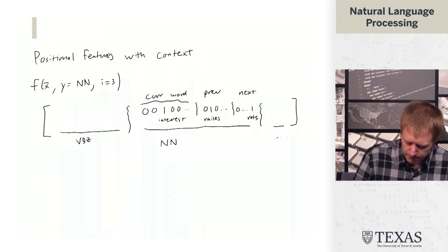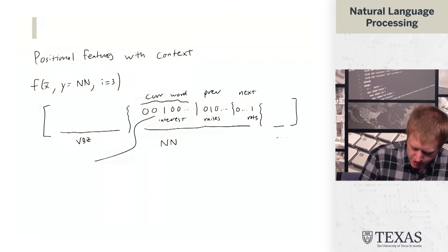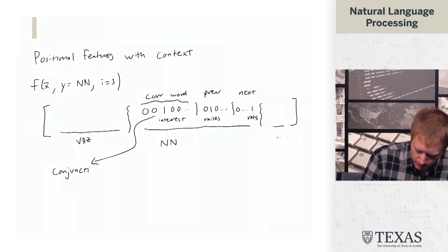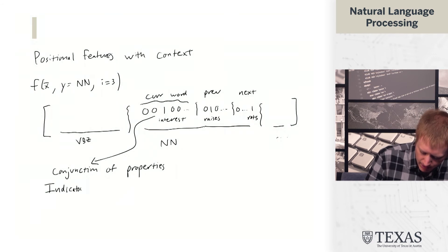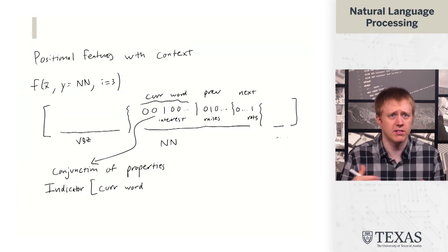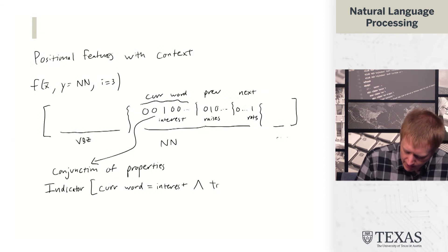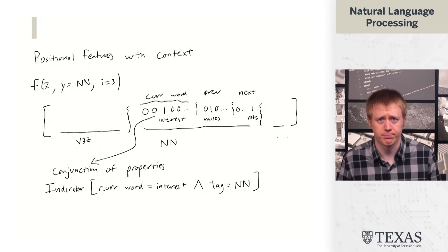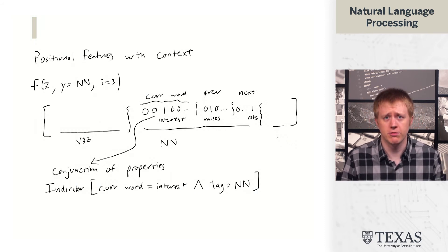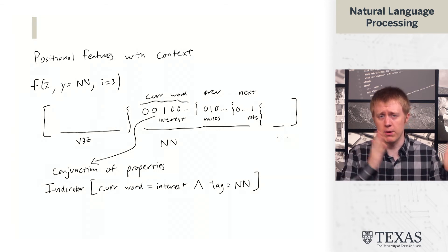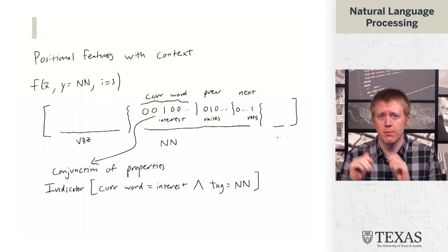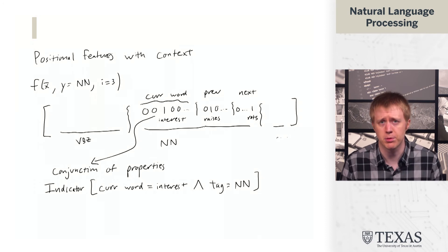So the way we can think about each position in this vector space is as a conjunction of several properties. And we call this an indicator. And in this case, it's an indicator that the current word, which is defined with respect to this position I equals three, current word equals interest. And the tag equals NN here. And so the tag information came from where we are in this big block structure thing. The current word bit came from this smaller block structure within that. And then interest was associated with this particular position in the vector space.